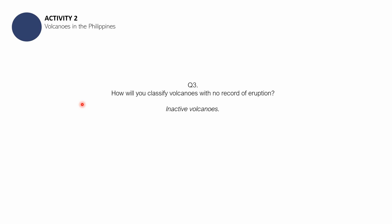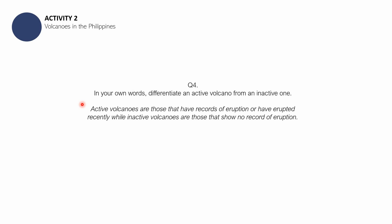I hope you're grasping the difference between the two. Note that for the purpose of this discussion, we are not including 'dormant' as a classification, because the learning competency set by the Department of Education is specifically asking you to know the difference between active and inactive volcanoes. For question four: active volcanoes are those that have records of eruption or have erupted recently, while inactive volcanoes are those that show no record of eruption. If your answer is close to this, that is accepted — just make sure the key content is present.